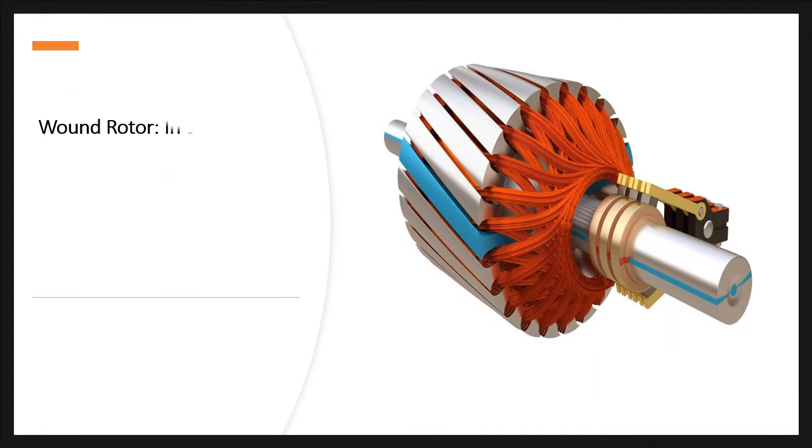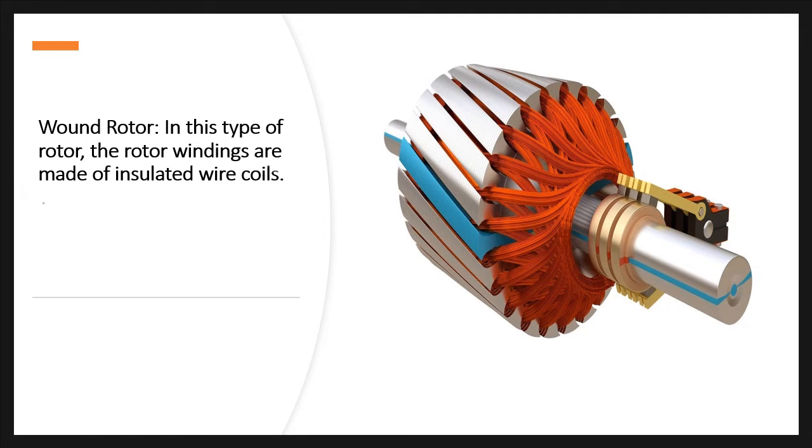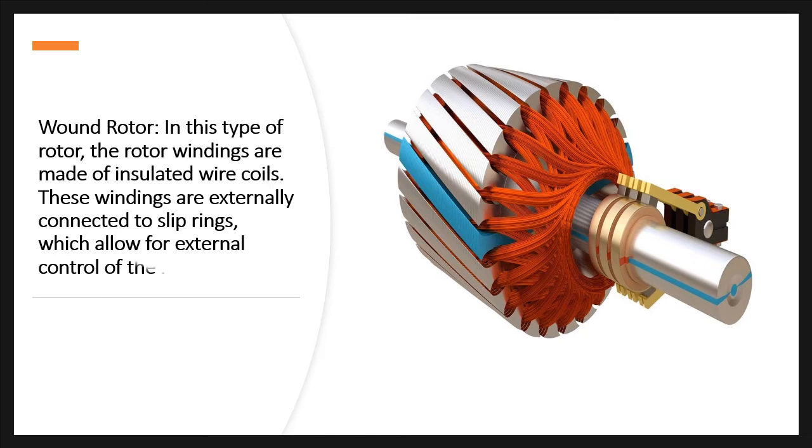Wound rotor: In this type of rotor, the rotor windings are made of insulated wire coils. These windings are externally connected to slip rings, which allow for external control of the rotor circuit.